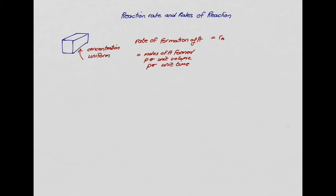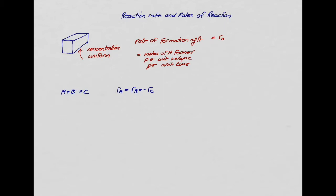Let's try this on an example. Consider the reaction A plus B goes to C. From the mass balance, we know that the rate at which A is being formed must be the same as the rate at which B is being formed, and it's minus the rate at which C is being formed.